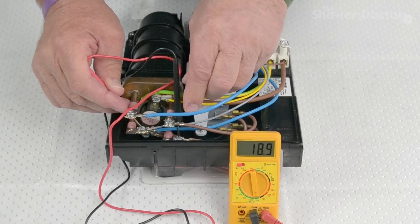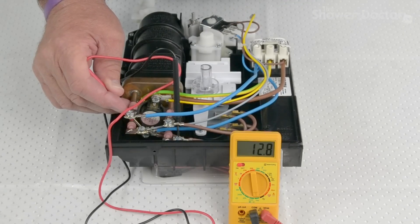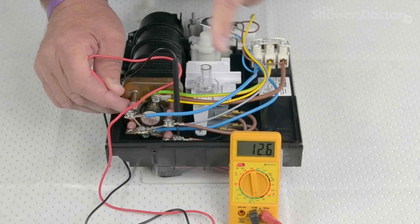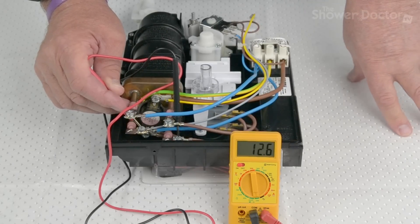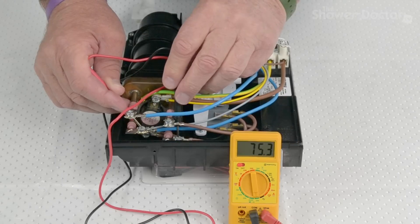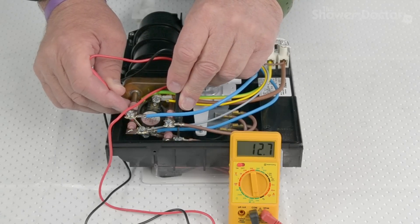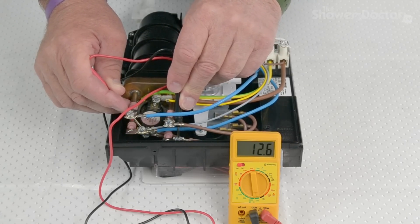If the element's faulty, there'll be really no reading at all. It'll read zero, or alternatively, you'll get some really weird readings. The meter will be jumping about all over the place. And so that's all you need to do to check the resistance in the ohms, in the elements.